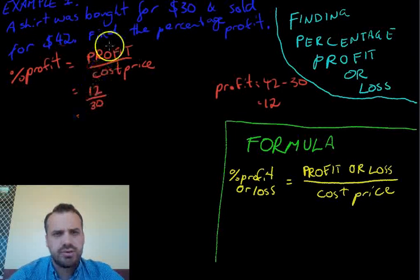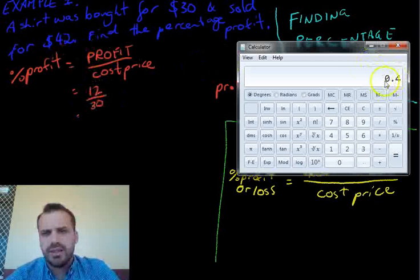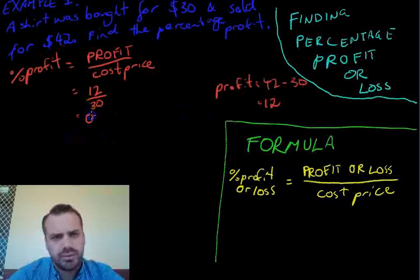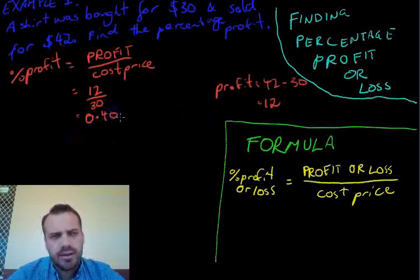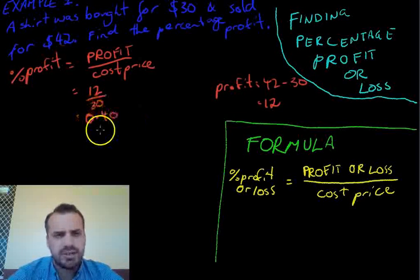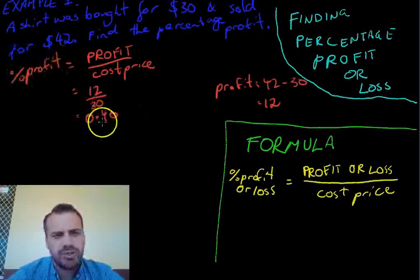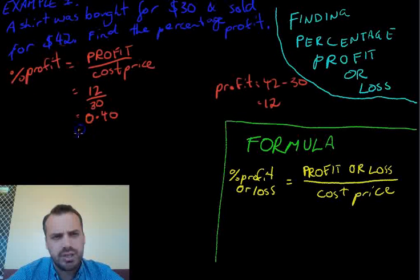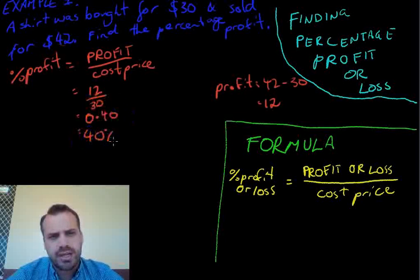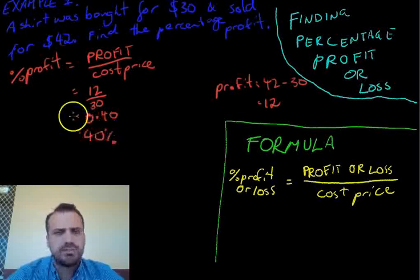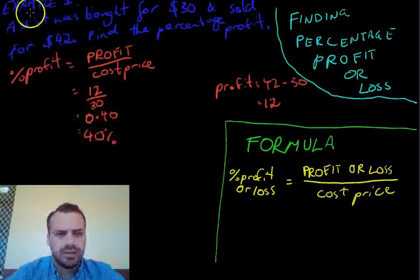We can type that directly into a calculator and we should get an answer. You can see our calculator gives us an answer of 0.4. Now, remember, that's a decimal. We want a percentage profit, so we need to convert it to a percentage. Move the decimal place two spots. That's a 40% profit. A pretty decent profit if you're selling shirts.